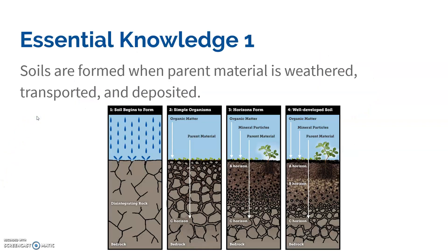Soil is formed over a long, long period of time — something like 10,000 years for a centimeter of good soil. Soils are formed when the parent material, or the rock, gets weathered. Weathered means it gets broken down into smaller and smaller pieces.